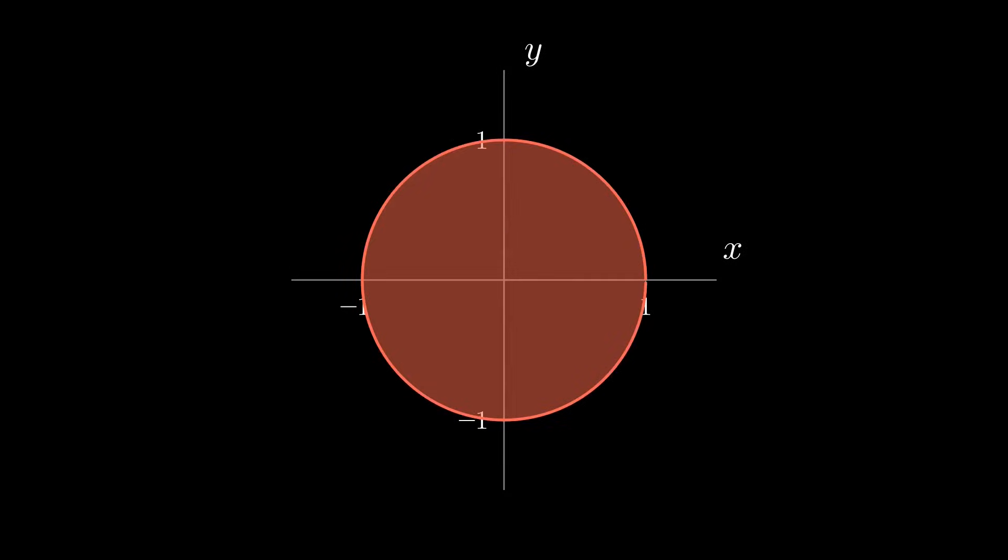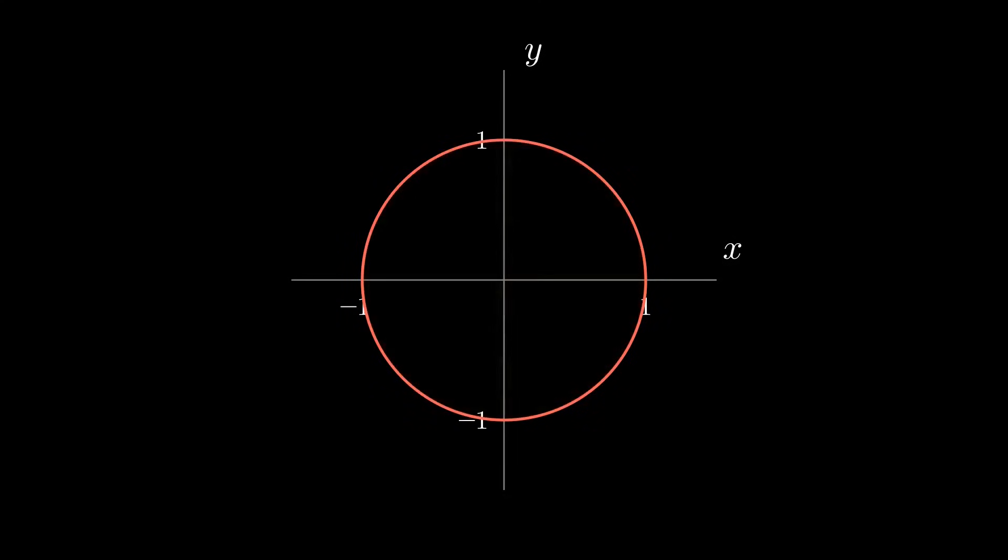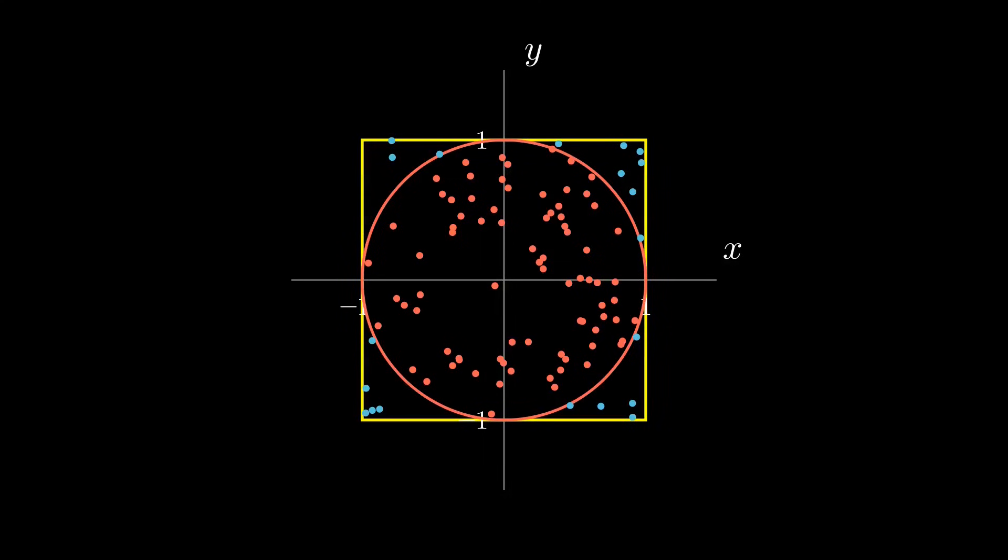Let's begin with an intuitive example. We will approximate the area of the unit circle, and thus pi. To do so, we will sample points at random in a square that contains the circle.